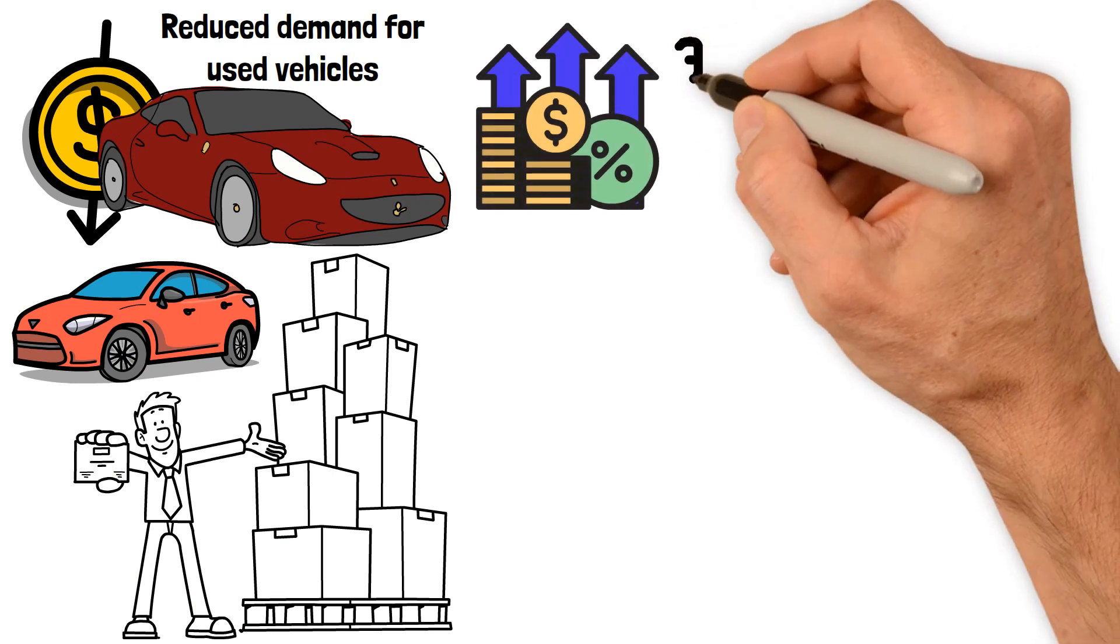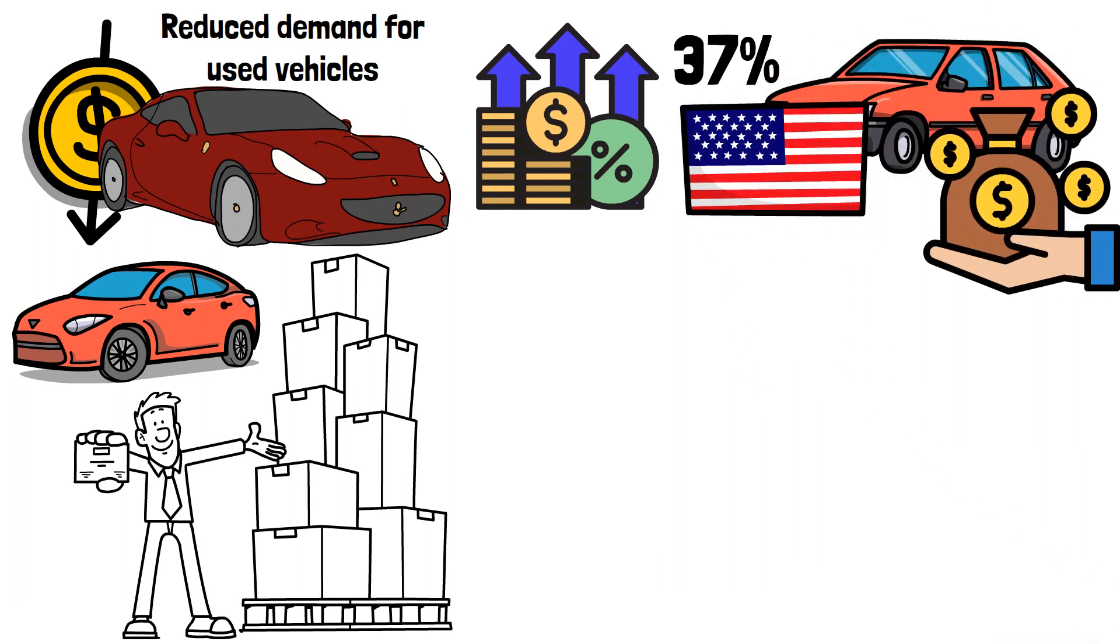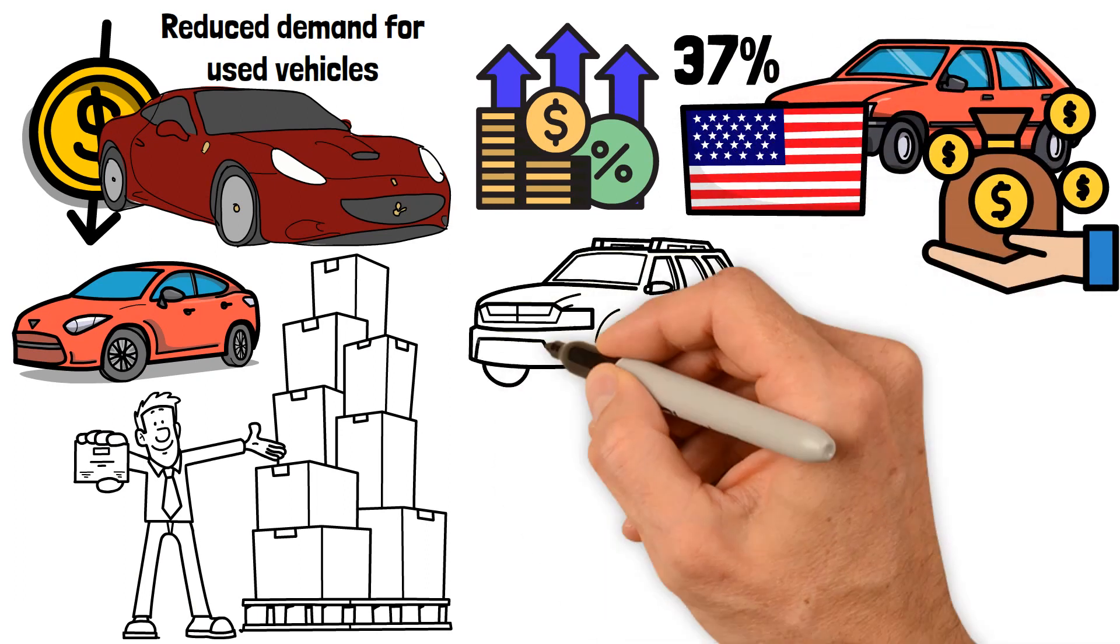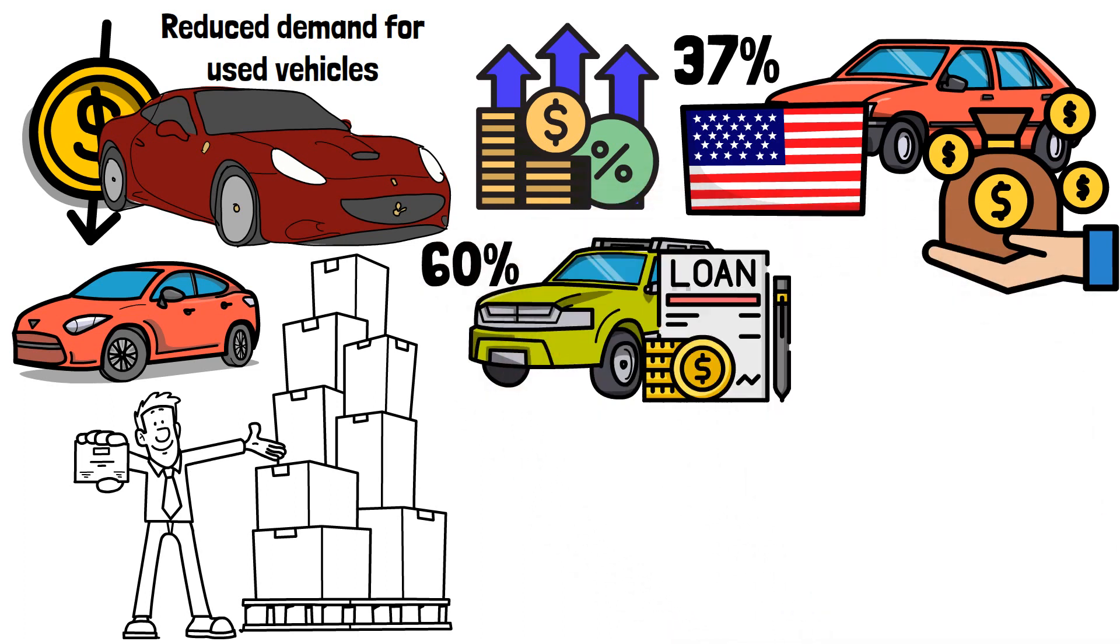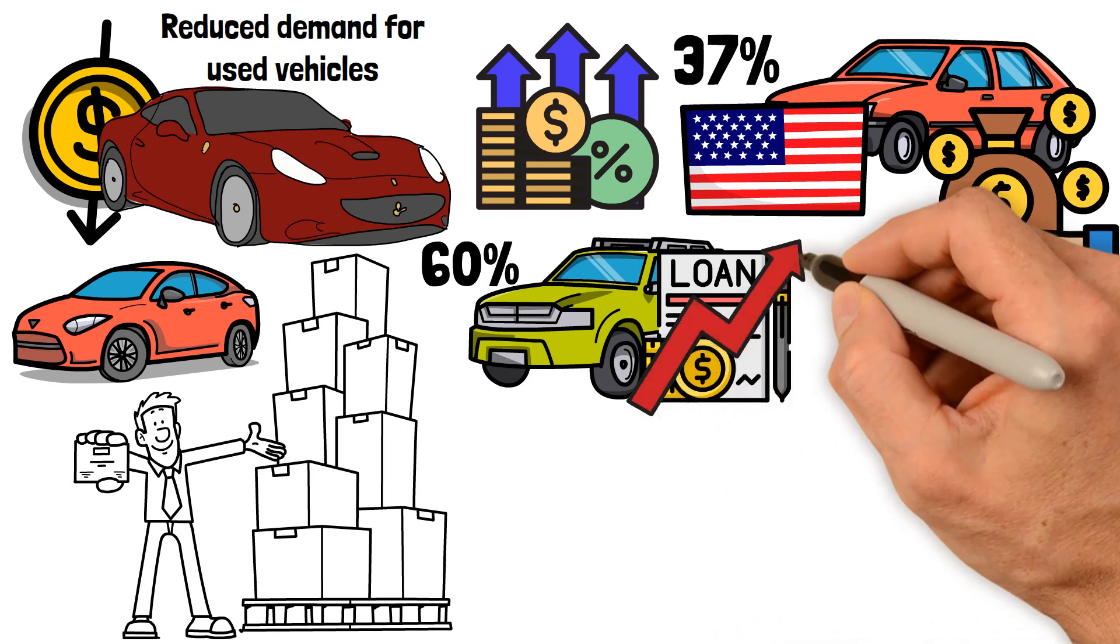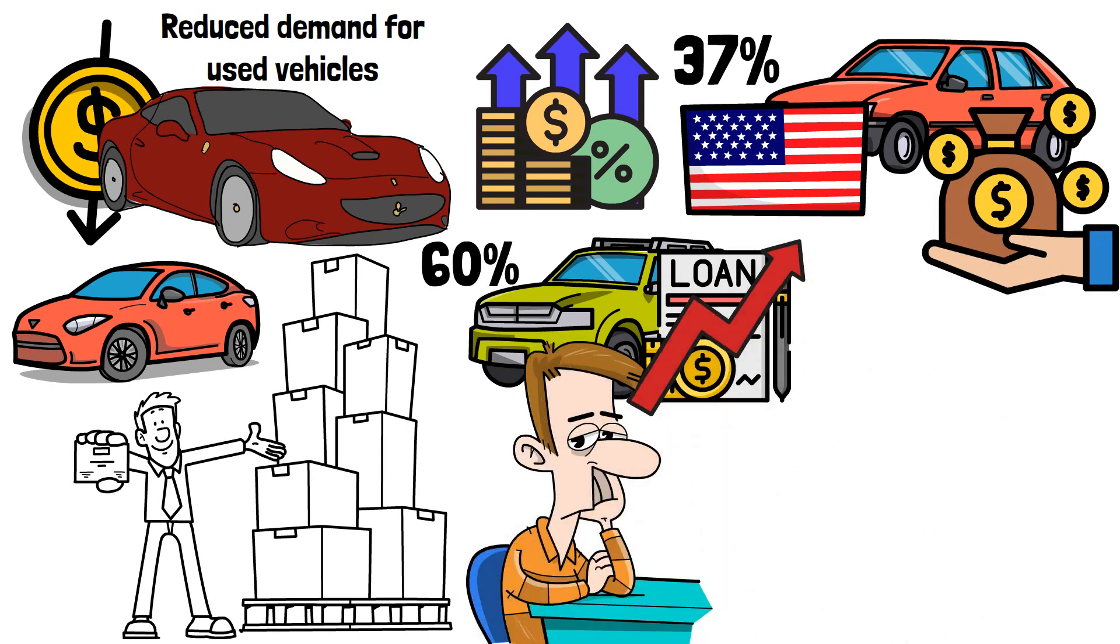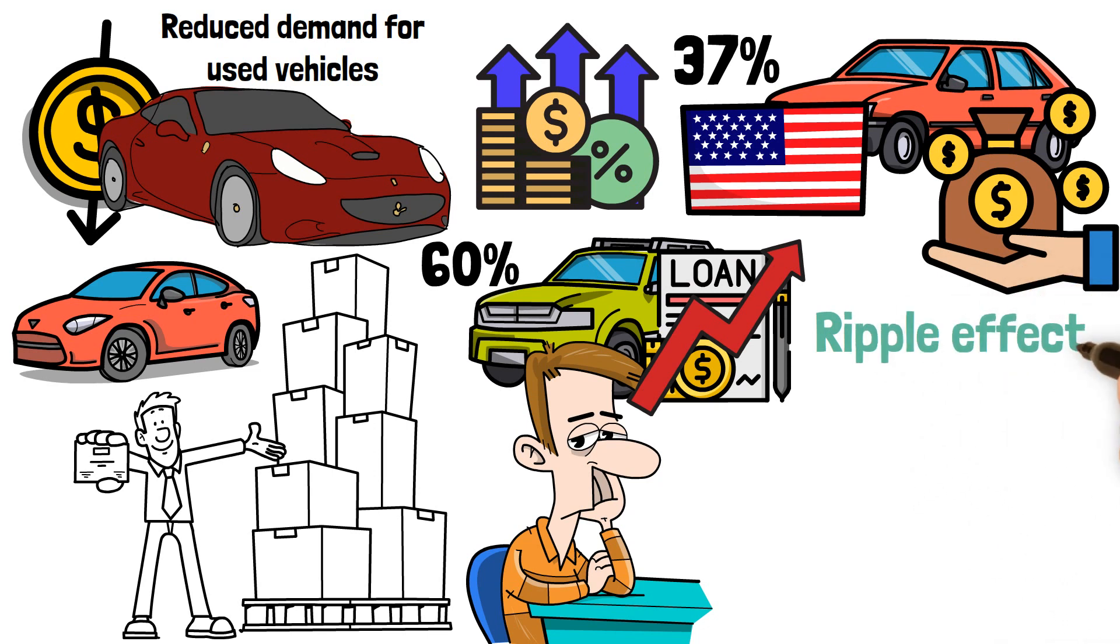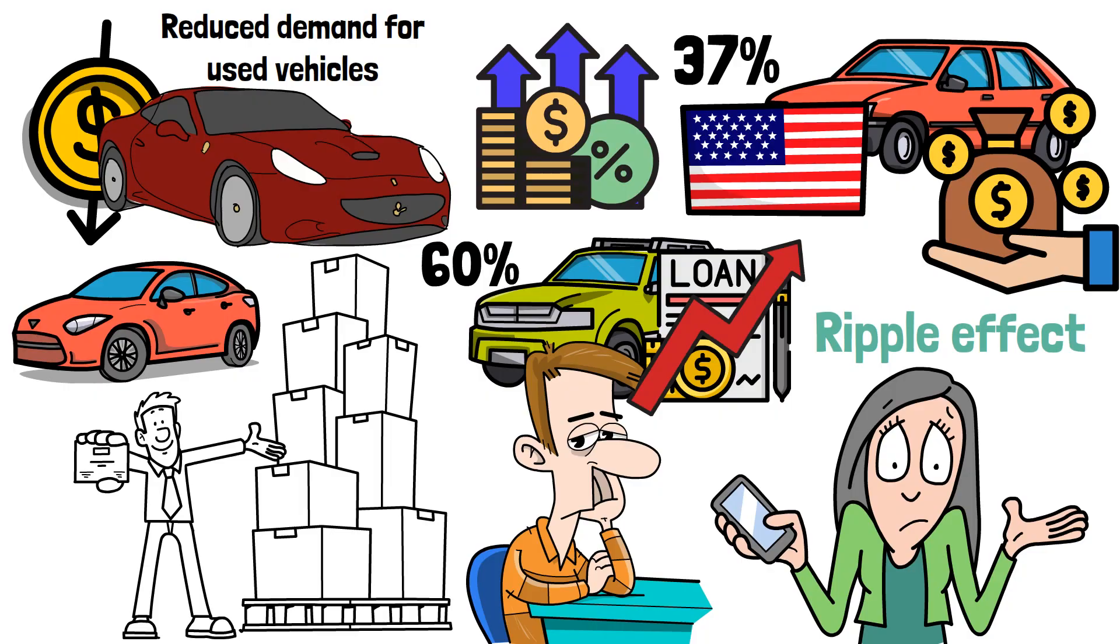For example, at least 37% of used cars sold in the United States are being sold with financing. Similarly, dealers reportedly sell over 60% of their volume with loans, and as these loans are getting more expensive, it becomes more challenging for consumers to acquire vehicles. In the end, it is always a ripple effect, and people like you and I are typically at the receiving end.